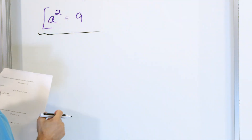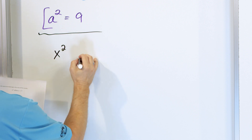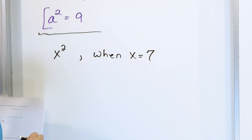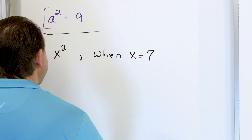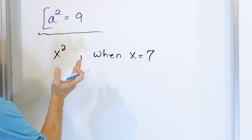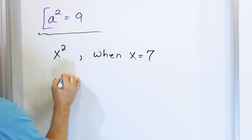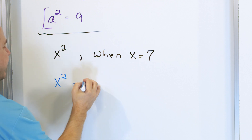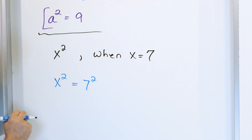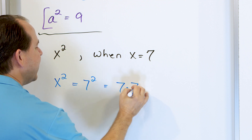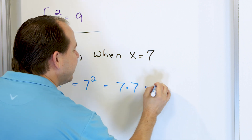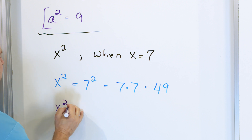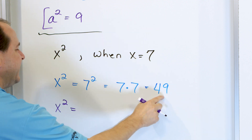Let's calculate the value of X squared when X is equal to 7. I'm telling you that X is equal to 7. Whatever X is, it's got to be squared. But I'm telling you X is equal to 7, so I'll stick it in there and that has to be equal to 7 squared. I know that 7 squared is 7 times 7 because that's what the exponent means. And 7 times 7 is 49. So the value of X squared, when X is equal to 7, is equal to 49.